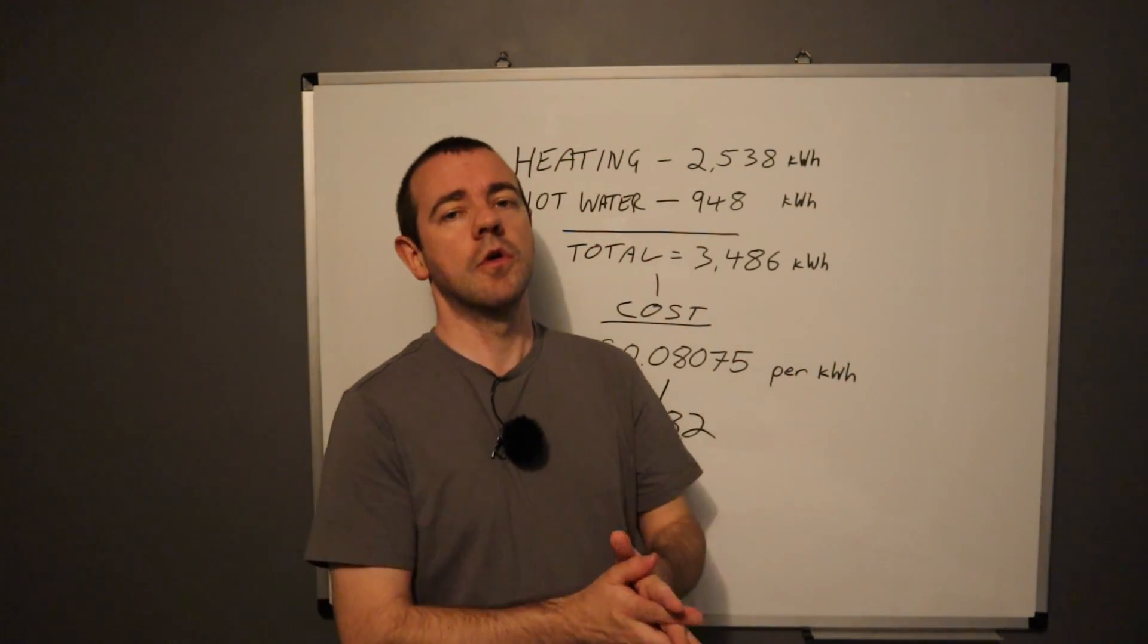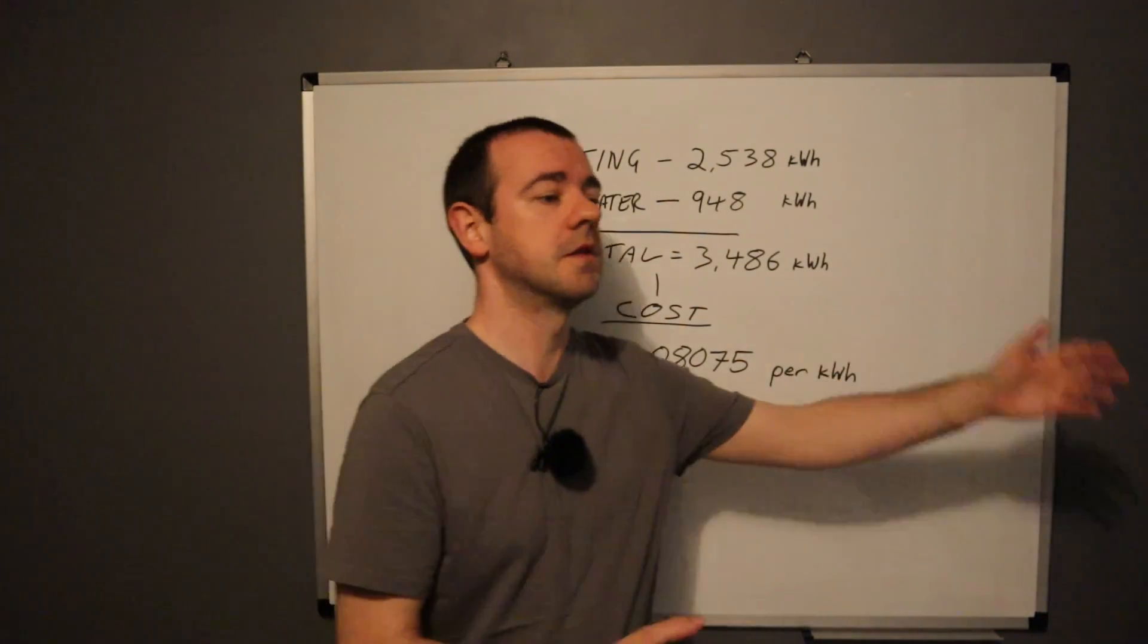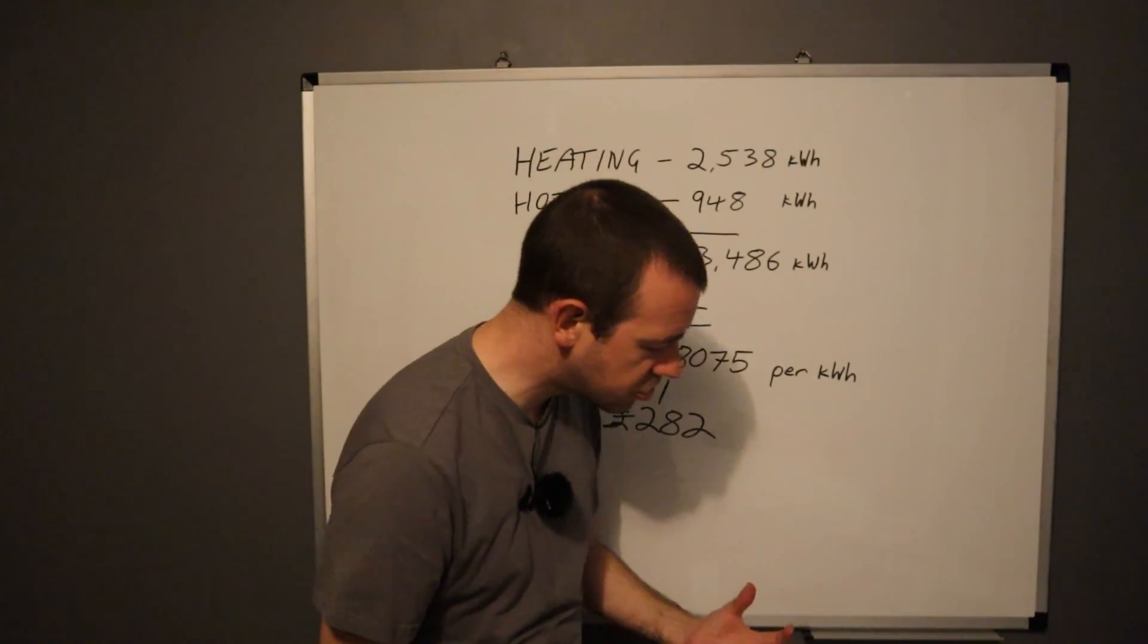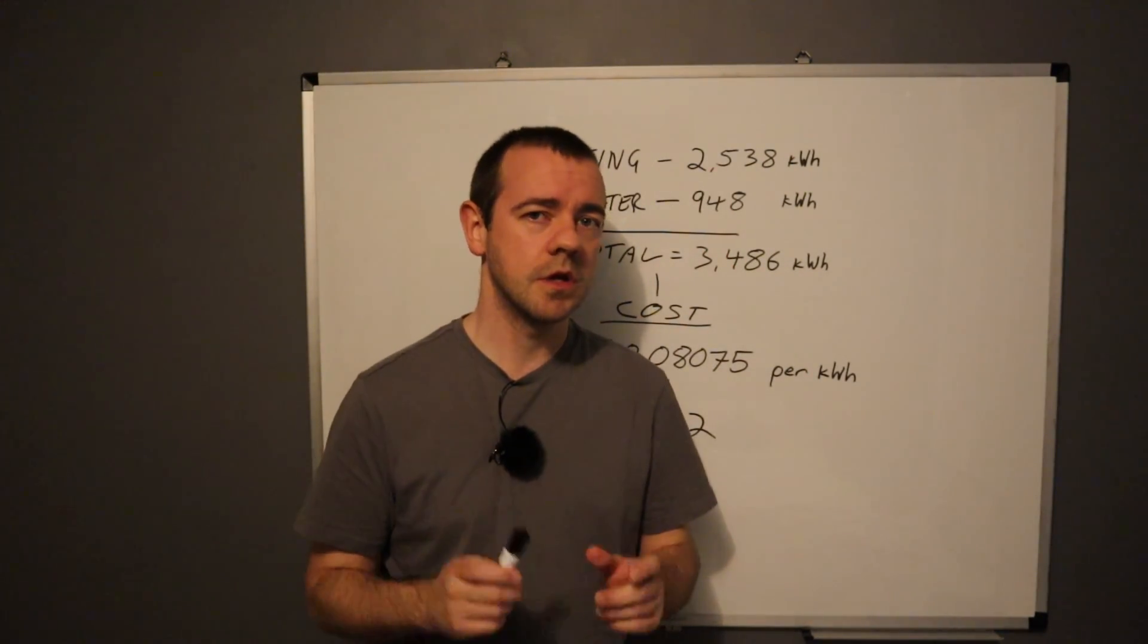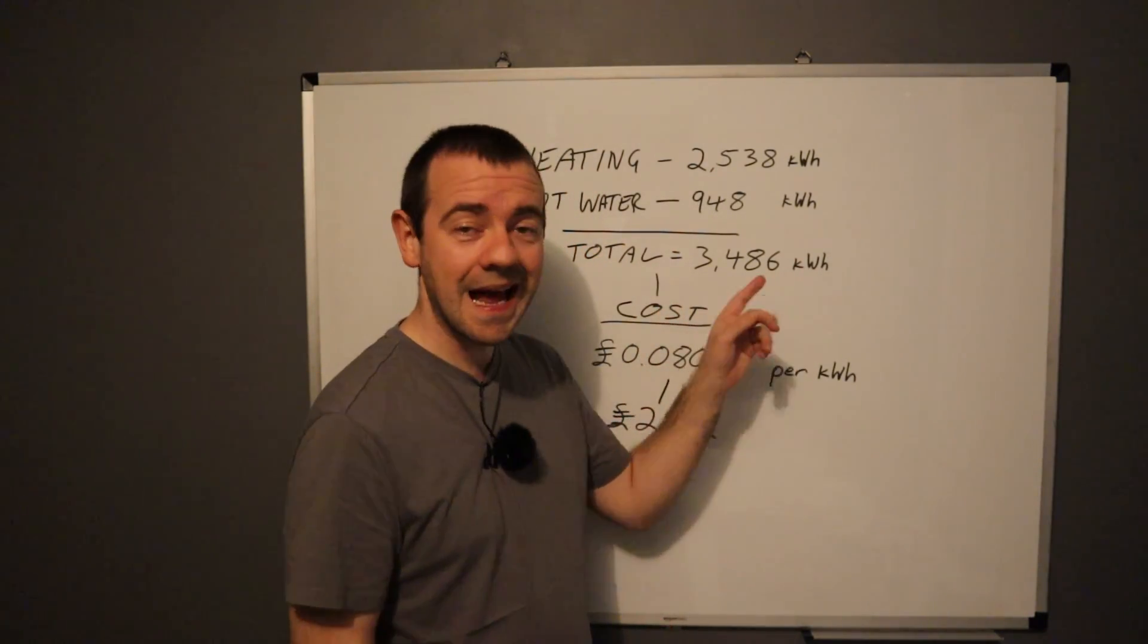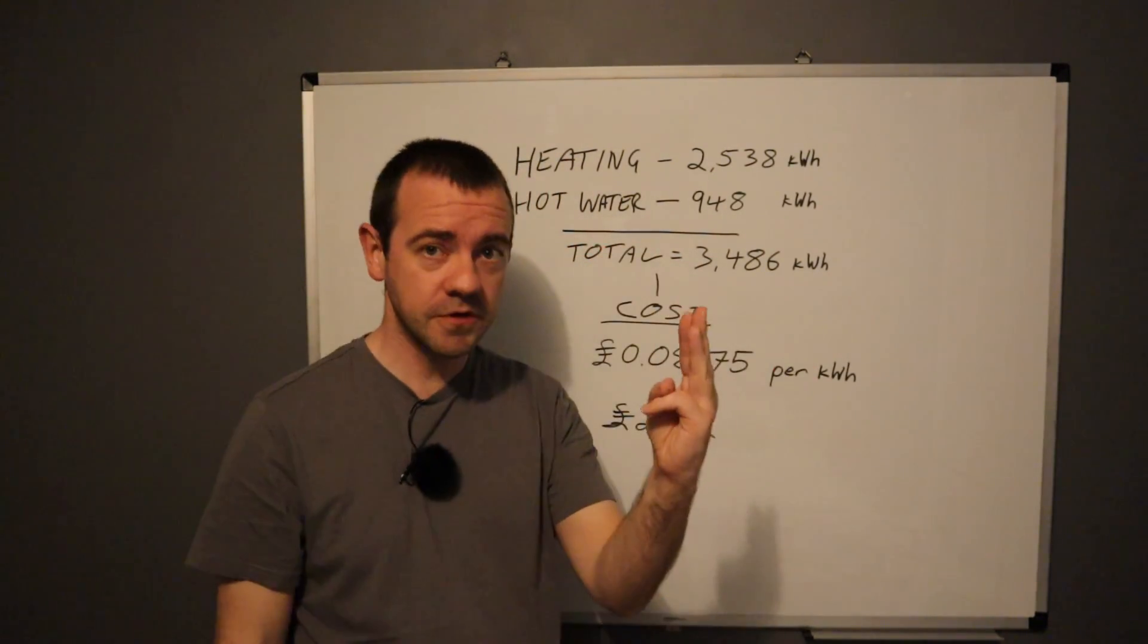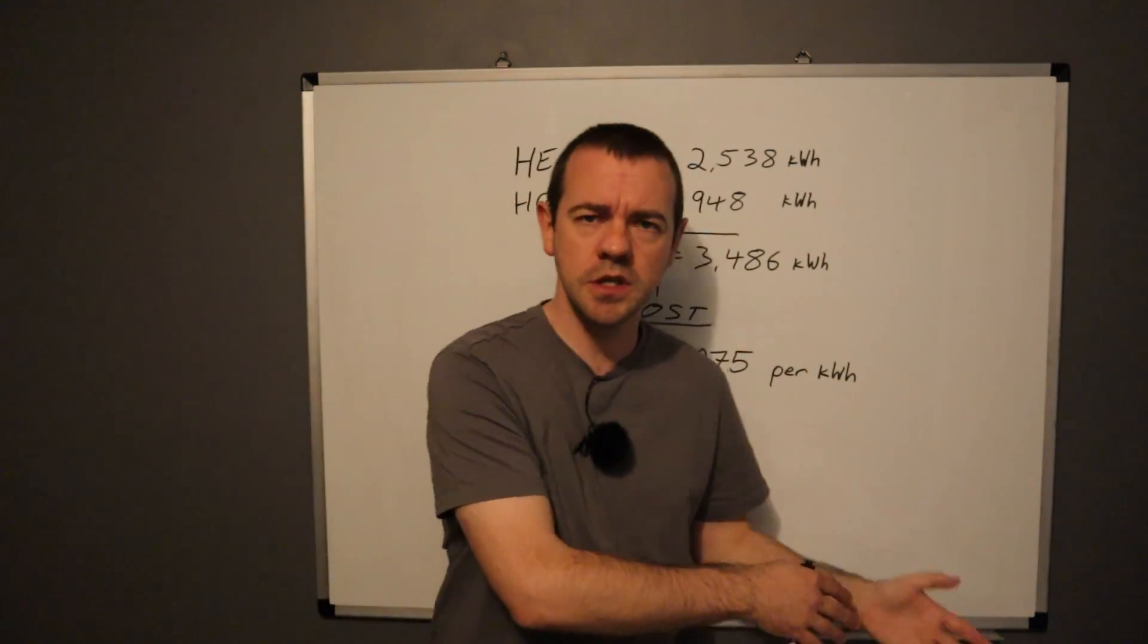Now, how much gas did we use over the previous years, which obviously isn't last year because we didn't have a gas boiler, it's the previous ones to that. Again, due to missing bills from Octopus, I can't give you an exact amount, which is thoroughly frustrating. I think we've used around thirteen to fourteen thousand kilowatt hours per year on average in this house. We use six and a half thousand kilowatt hours just for winter alone in gas. So six and a half thousand kilowatt hours for three months of the year instead of three and a half thousand for the full twelve months. Obviously winter uses the bulk of that.